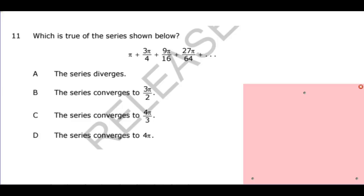Next question: which is true of the series shown? The series starts with pi and contains pi in every term. Going from the first to the second term, it looks like we multiplied by 3 fourths. Checking the third term with 9 sixteenths confirms we multiplied by 3 fourths again, so the common ratio is 3 fourths and this is geometric. Just because you see fractions doesn't always mean geometric — you need to verify the pattern.